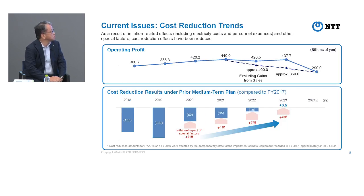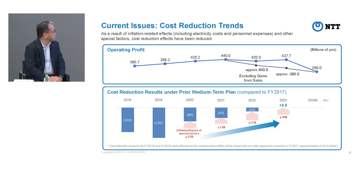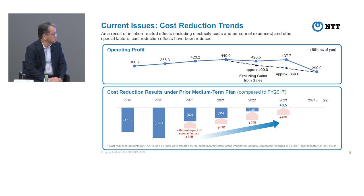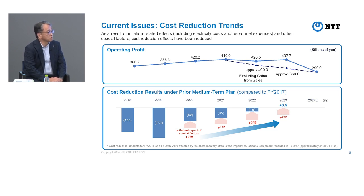The next slide shows the cost reduction trends at Entity East and West over the past years. From about 2018 and 2019 they carried out very large-scale cost reductions, but year by year the cost reduction numbers seem to be dwindling. If we exclude special factors such as inflation, the real cost reduction is becoming smaller. Why is this the case? These are the frequently pointed out questions, and these are the two key features of their performance.